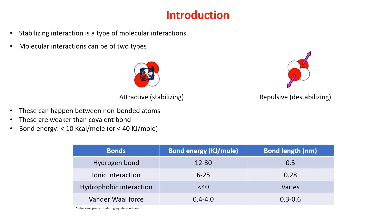A stabilizing interaction is a type of molecular interaction. Molecular interactions can be of two types: attractive and repulsive. In our biological system we have biomolecules, and these biomolecules are stabilized with the help of these molecular interactions. If the interaction is attractive in nature, it stabilizes the biomolecule and helps to maintain it in its native conformation. If the interaction is repulsive in nature, it destabilizes the biomolecule.